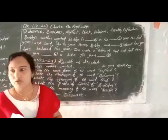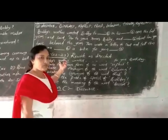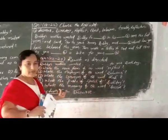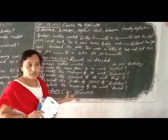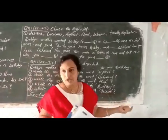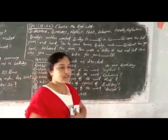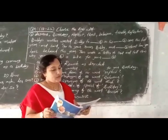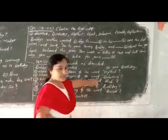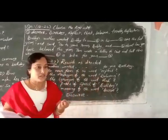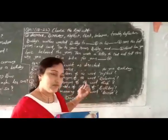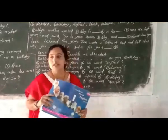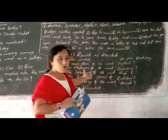Question number 22 to 27: 'Rewrite as directed.' They will underline some words in the passage and you need to give answers according to the instruction. For example: 'Bobby's mother wanted Bobby to reflect' — write the noun form of the word 'reflect.' Reflect is a verb; what is its noun form? You need to search in the dictionary and write the noun form.